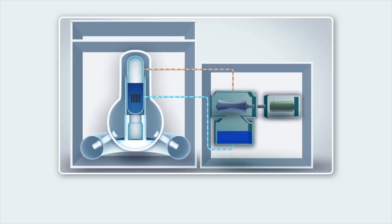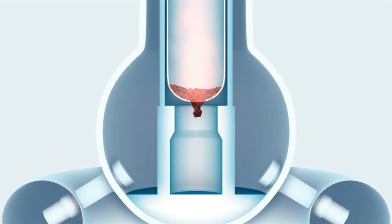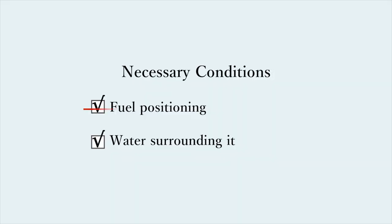The heat energy obtained from criticality generates steam, which then turns turbines to generate electricity. Currently, the melted fuel has changed shape, being mixed with the surrounding materials. The balance with the water has also been disrupted, and therefore, the current conditions are far from those where criticality is likely to occur.